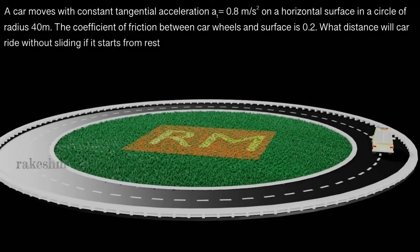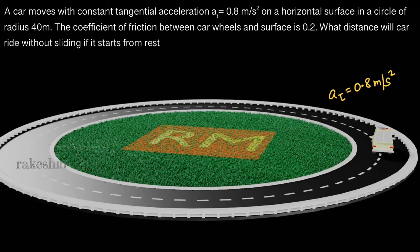Good morning all of you. Let us take a look at this question from laws of motion. A car moves with a constant tangential acceleration of 0.8 meters per second squared, which means its speed is increasing at a rate of 0.8 meters per second squared.